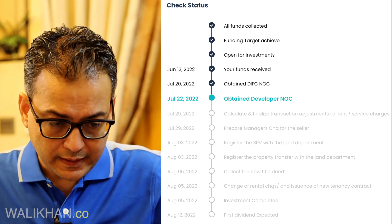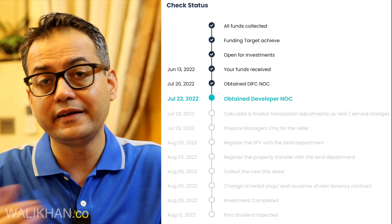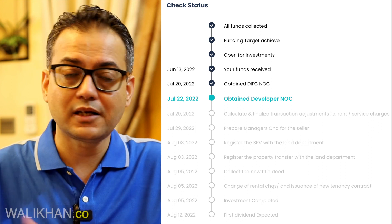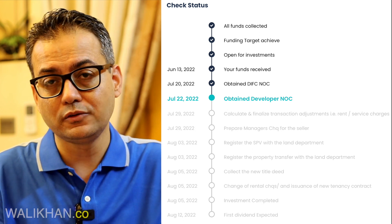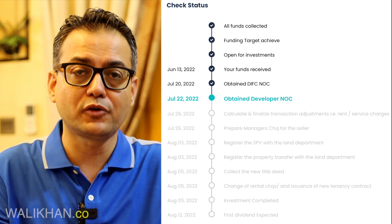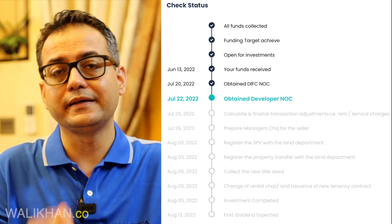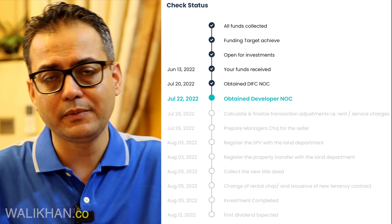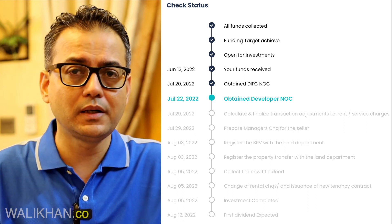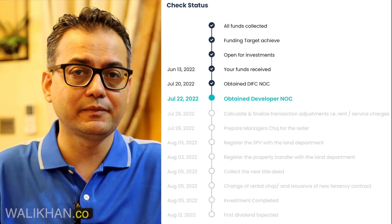Regarding the full process — by the way, the property I invested in is already rented. So once all this process is complete, I will receive my first dividend automatically. There are also other properties that are not yet rented — SmartCrowd renovates them and then puts them on rent. Multiple options are available, and each property's details can be found on their website.